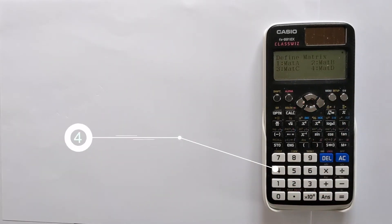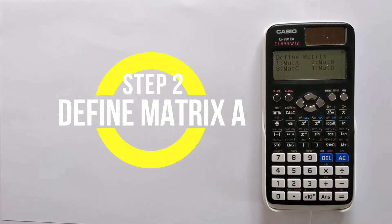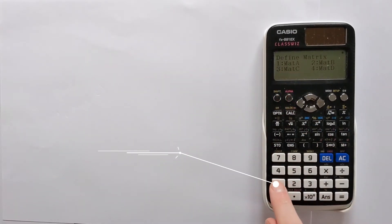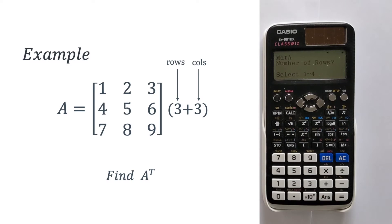So we press that, we're now asked to define the matrix. We're going to use matrix A by convention, so we're going to select option one. It will then ask for the dimensions of matrix A and you can see that it's a three by three matrix.